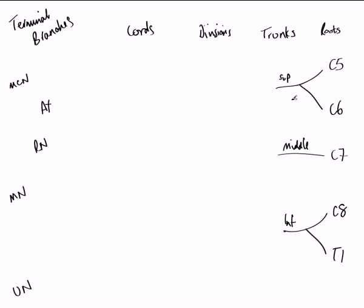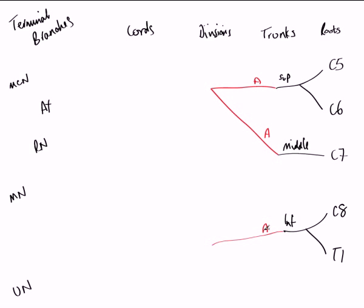If we look at the anterior divisions first: coming away from the superior trunk is an anterior division, labelled A. Also coming away from the middle trunk is an anterior division, which travels distally to unite with the anterior division from the superior trunk. The anterior division coming from the inferior trunk just continues distally and doesn't converge with any other division. So here we can see the three divisions coming from the three trunks.